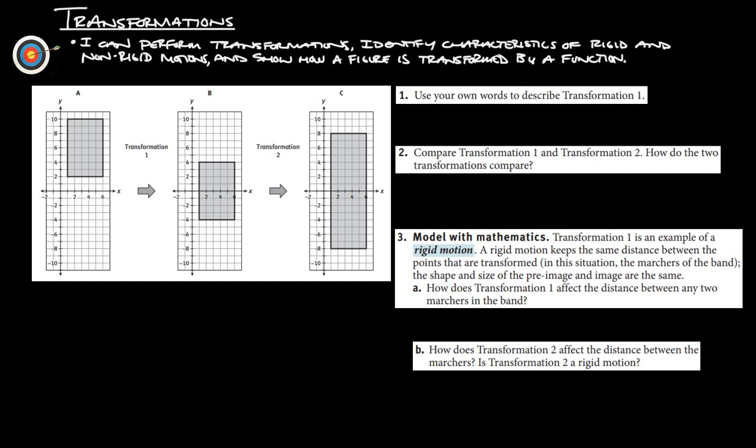Use your own words to describe transformation one. So this first transformation, transformation one here, we're going to simply just take that transformation. We're just going to slide it down the coordinate grid here. So we just take it from here and it's just going to go straight down here and up right here, which is that piece there.